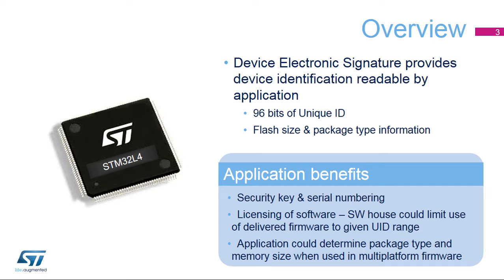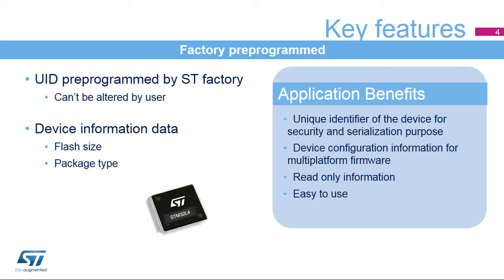Application benefits include using a unique identifier as part of security keys, as a serial number, or for control of software distribution and licensing based on UID. The unique identifier and other device information are pre-programmed by the ST factory and cannot be altered by the user, making it suitable as a security key, serial number, or software licensing identifier.